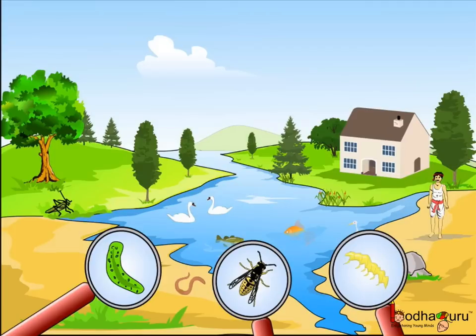If you look around, you will find many living organisms which are a part of the environment, like plants and animals. We are surrounded by many small organisms too. Few of these cannot be seen through the naked eye. These are microbes like bacteria, protozoa, etc.